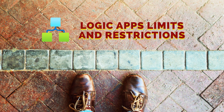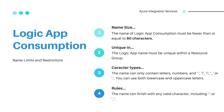Depending on the Logic App type you are using — Logic App Standard or Logic App Consumption — you will notice that each of them has different name size limits. Let's have a look at the Logic App Consumption name restrictions. The name of Logic App Consumption must be fewer than or equal to 80 characters, but it also contains the following restrictions.